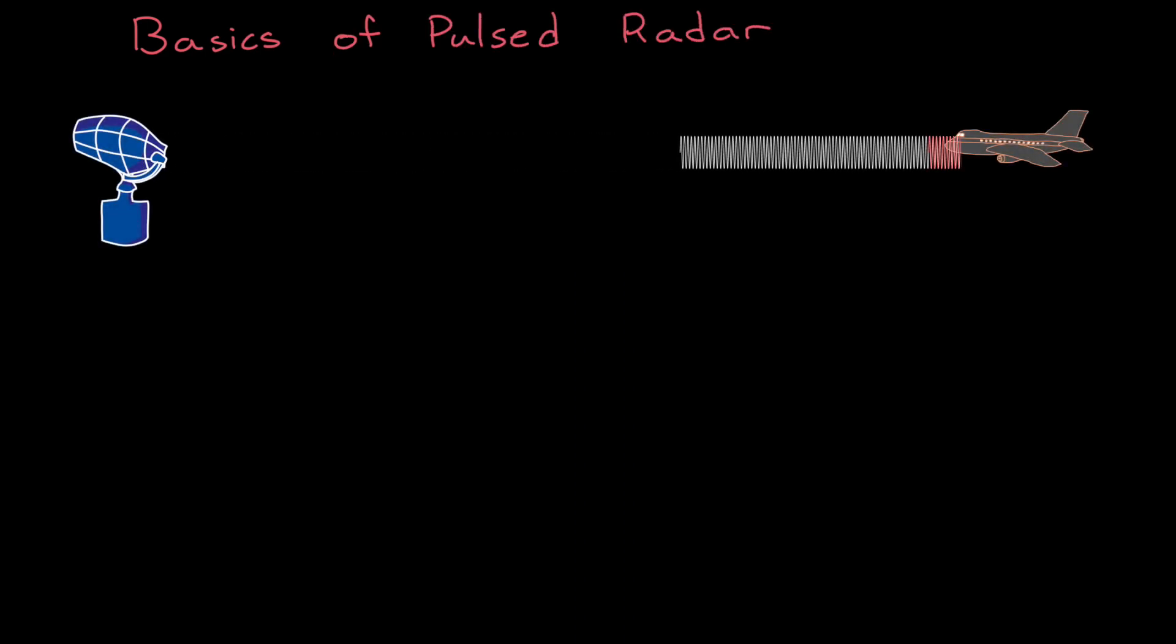In a previous Tech Talk, we covered the basics of pulsed radar. That's where a radar system sends out short bursts of power, followed by some amount of silence where the radar is listening for the echo.